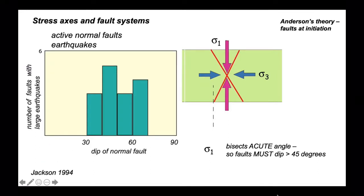If we look at earthquake data from normal faults, we can see they have an array of orientations dipping anything from 30 degrees up to 70 degrees.